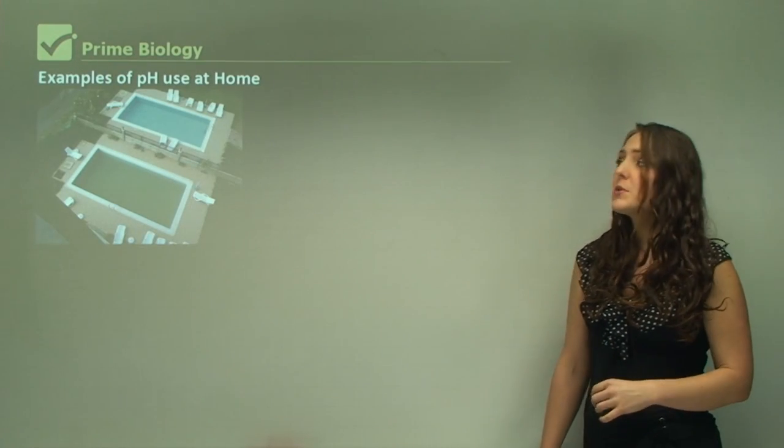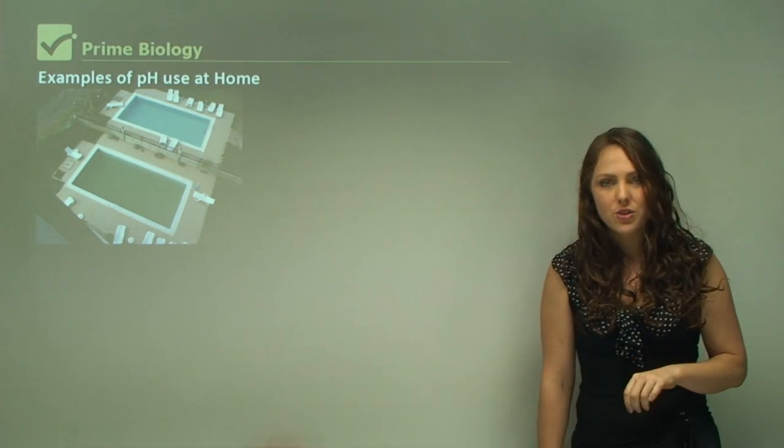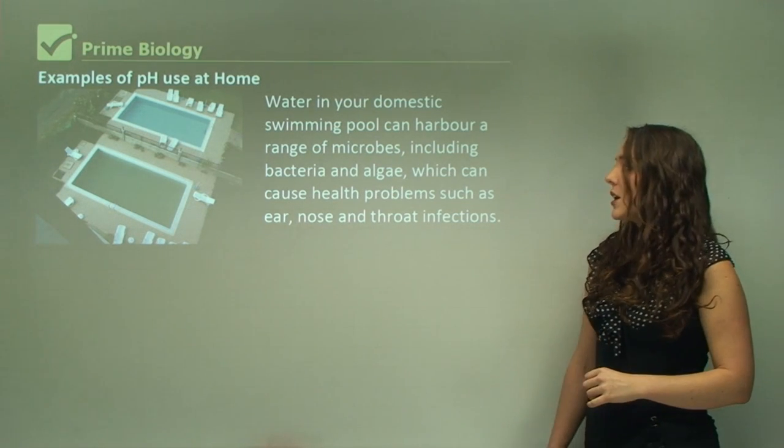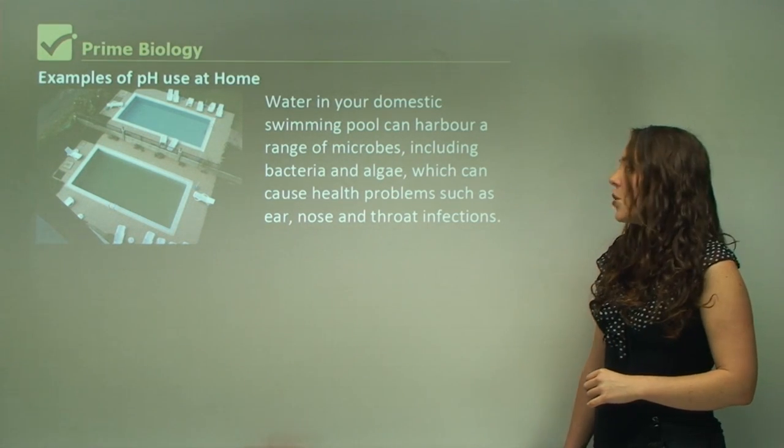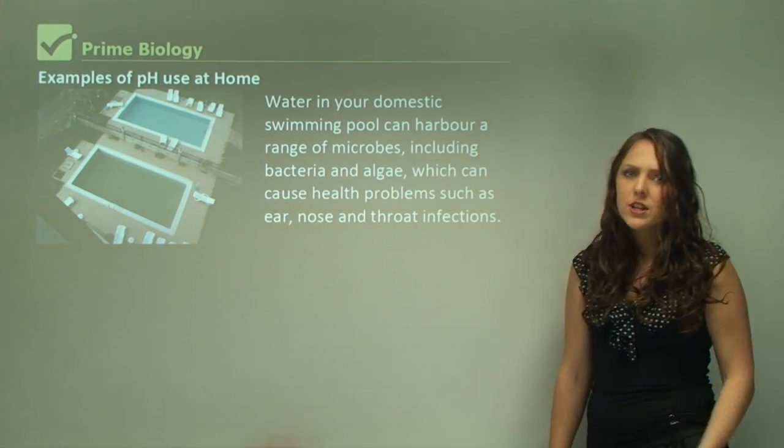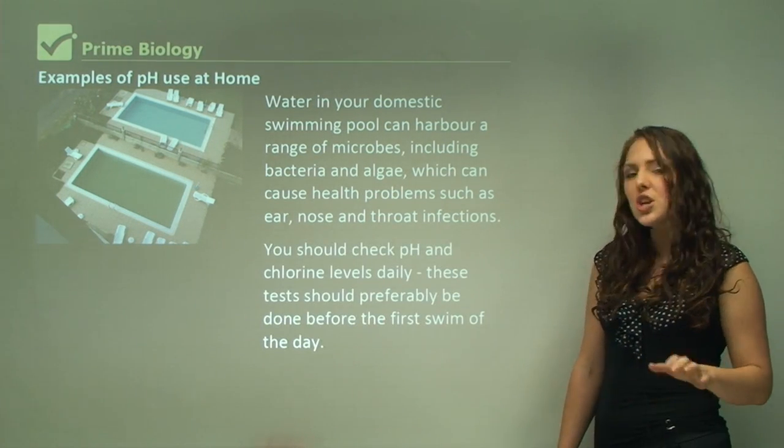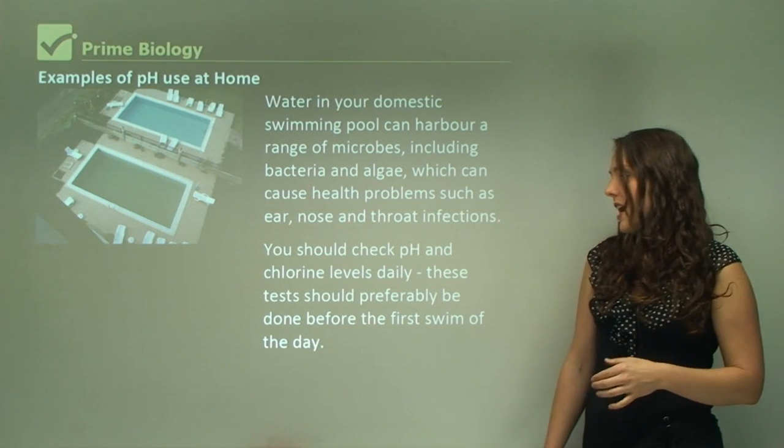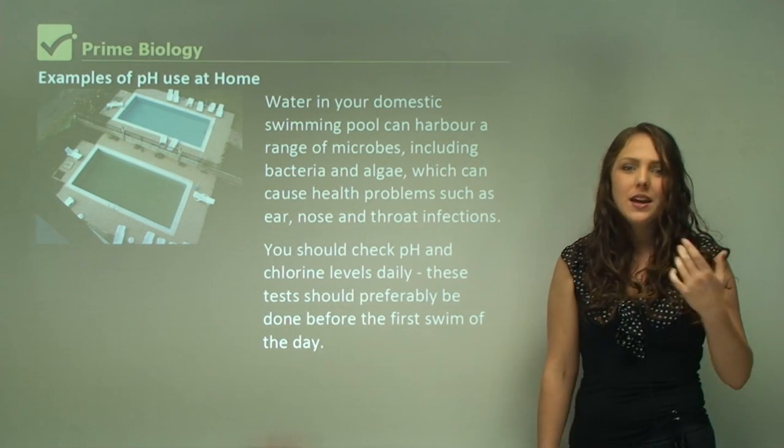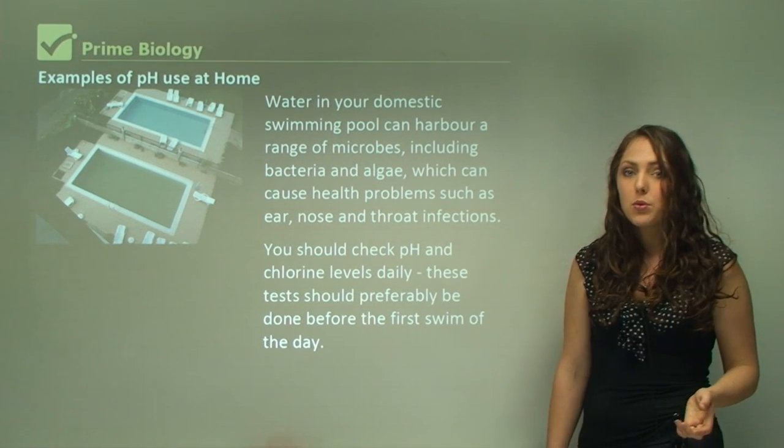Examples of pH uses at home. If you have a pool, pH is extremely important. Water in your domestic swimming pool can harbor a range of microbes including bacteria and algae which can cause health problems such as ear, nose and throat infections. You'll notice if you've been swimming in a communal pool and get sick straight after, it's probably from the pool water itself. You should check the pH and chlorine levels daily. These tests should preferably be done before the first swim of the day in a communal pool. In your pool at home you might check it every third day because you know it's only a few people in that pool.